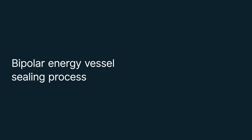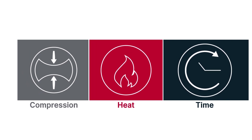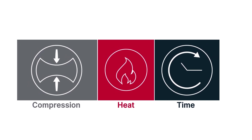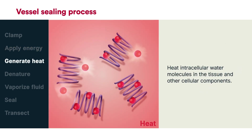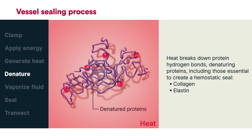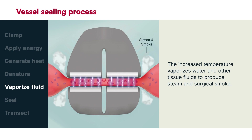Bipolar Energy Vessel Sealing Process. Bipolar energy devices utilize a balance of compression, heat, and time on tissue to seal vessels. It begins with clamping on a vessel to achieve compression and then applying energy. The current flowing between the jaws of the device heats intracellular water molecules in the tissue and other cellular components. The heat breaks down protein-hydrogen bonds, denaturing proteins, including those essential to create a hemostatic seal, such as collagen and elastin. The increased temperature vaporizes water and other tissue fluids, which produce steam and surgical smoke. This results in a sticky coagulum of denatured proteins.